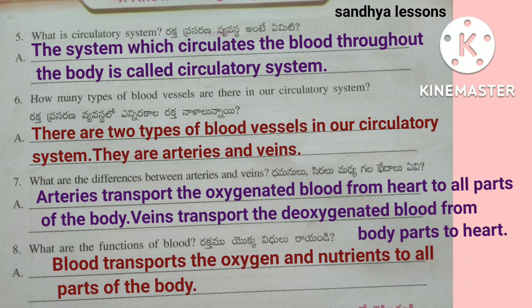Sixth question: How many types of blood vessels are there in our circulatory system? There are two types of blood vessels — arteries and veins. Seventh question: What are the differences between arteries and veins? Arteries transport oxygenated blood from the heart to all parts of the body.